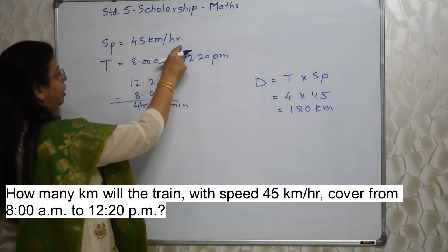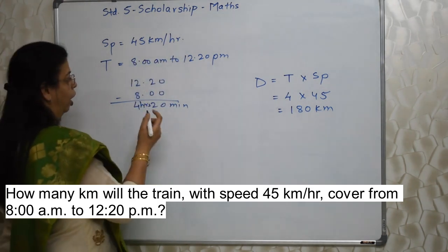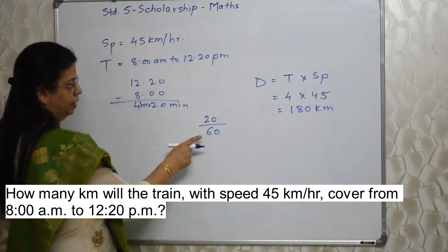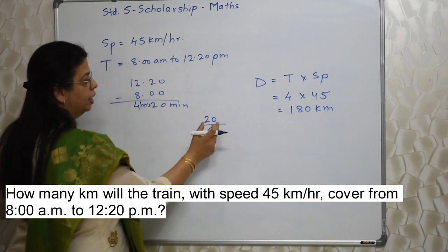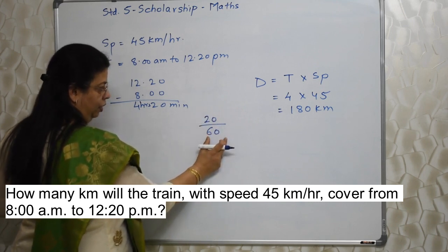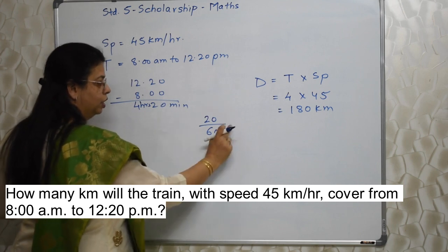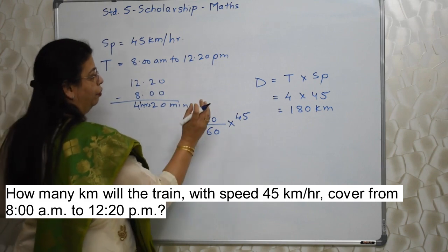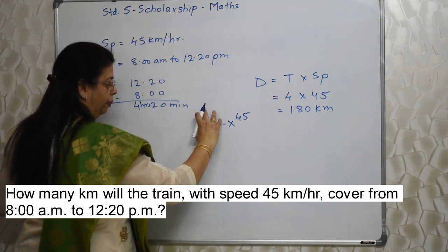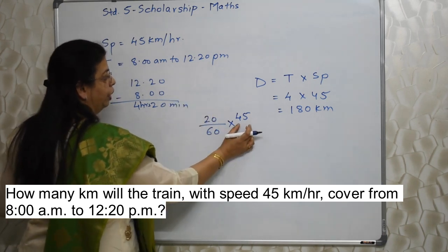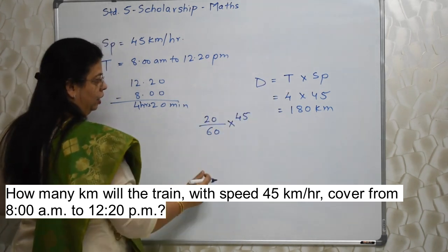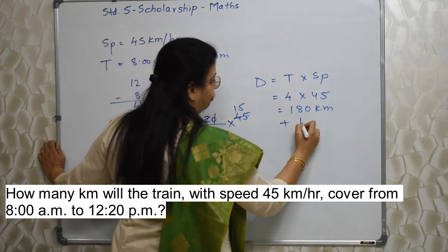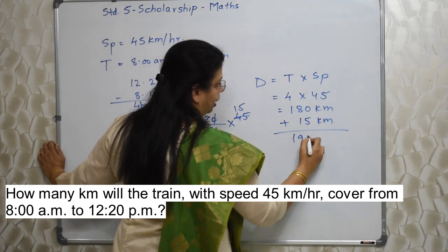How to find that out? Because the speed is given per hour and these are minutes. Convert the 20 minutes into hours: 20 upon 60. Because 60 minutes means 1 hour, and we are considering only 20 out of 60. When we want to convert any minutes part into hours, we divide that number by 60. Don't do the division — let it be like this, then multiply by speed 45. So the time into speed gives us 15 kilometers. We add this 15 to the earlier 180, so total distance is 195 kilometers.